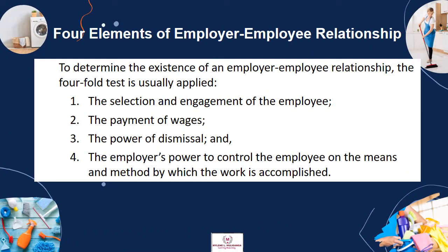There are four elements of the employer-employee relationship. To determine its existence, the four-fold test is usually applied. First, the selection and engagement of the employee. Second, payment of wages. Third, the power of dismissal. And fourth, the employer's power to control the employee on the means and method by which the work is accomplished.